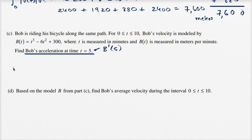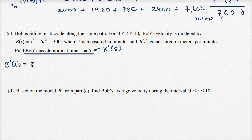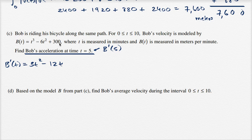So let's first figure out what b prime of t is. b prime of t equals — we'll take the derivative here, it's pretty straightforward, just use the power rule. So it's going to be 3t² − 12t, because 2 times negative 6 is negative 12, and then the derivative of 300 — 300 doesn't change with respect to time — so it's just zero.